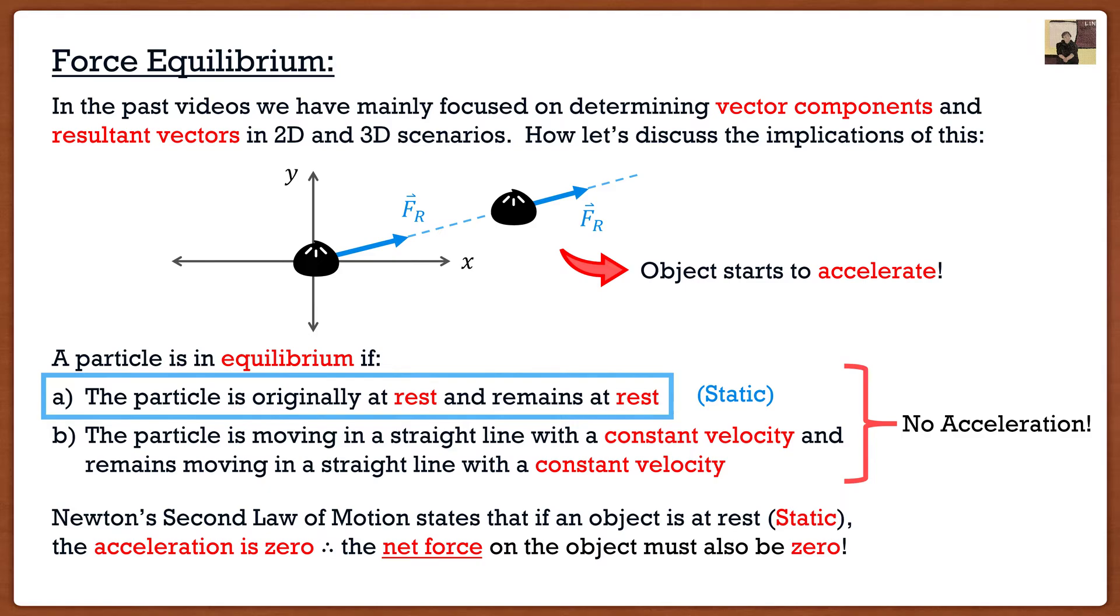What does this mean? Well, the net force on the object must actually be equal to zero, because we know that a force is equal to mass times acceleration. And if the acceleration is zero, well therefore the resultant force on these objects must be equal to zero.